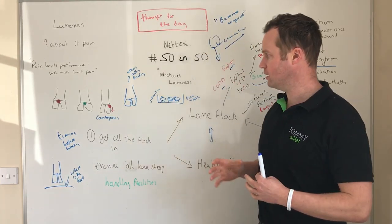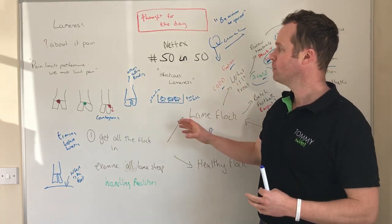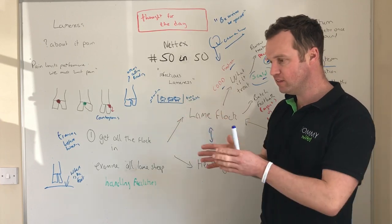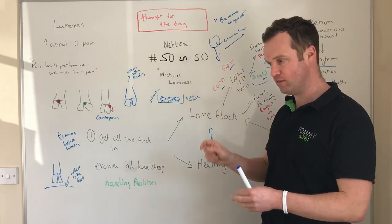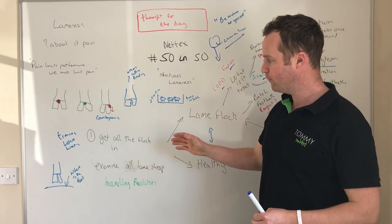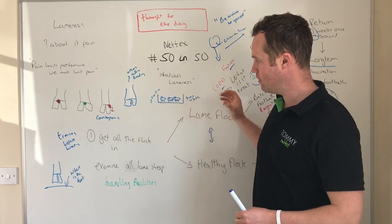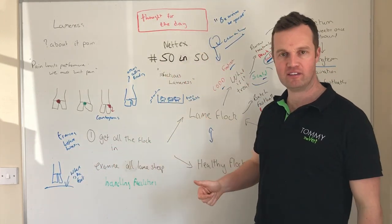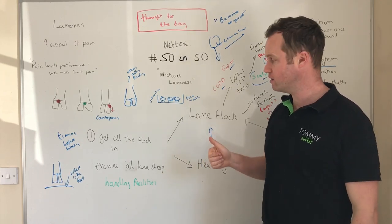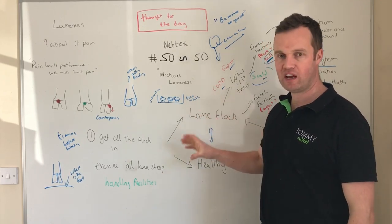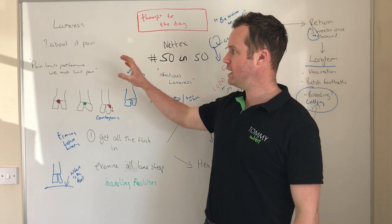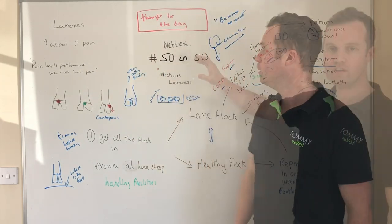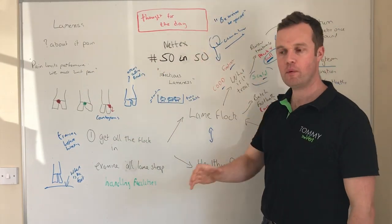This approach might seem like a lot of work to begin with, but if applied correctly and you aggressively step back and focus on prevention rather than just treatment, minimize risks at housing, and use vaccination — particularly for foot rot and CODD — you can really have a sound, healthy flock, limiting pain and lameness and getting better performance.